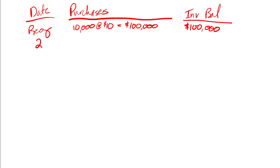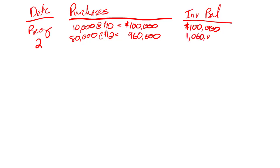The second transaction is another purchase: we purchased 80,000 units for $12 each, which is a total of $960,000. If I add that to the $100,000, I have $1,060,000 now in my inventory.